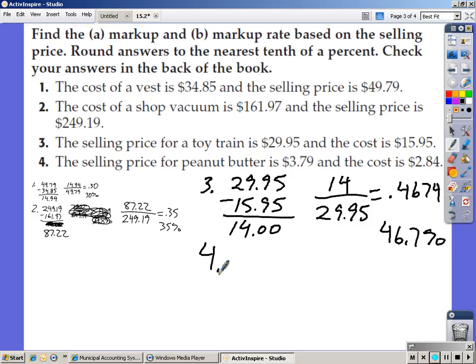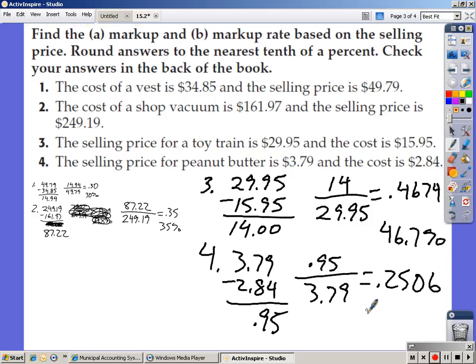And number four. We've got the selling price for peanut butter is $3.79. The cost is $2.84. So $3.79 minus $2.84 is $0.95. $0.95 divided by $3.79 works out to be .2506, which is 25.1%.